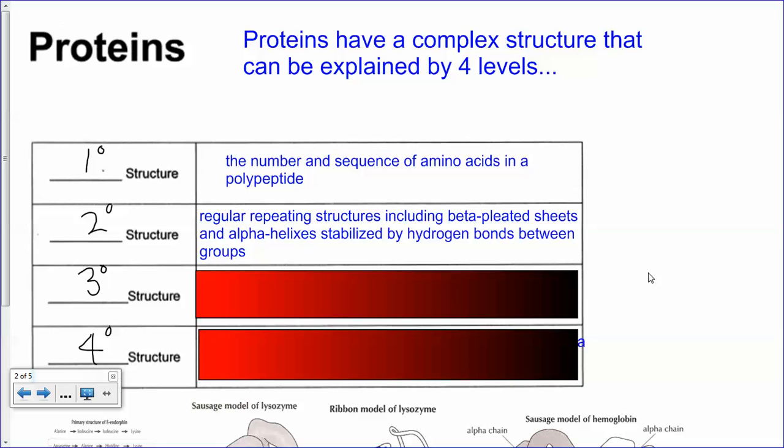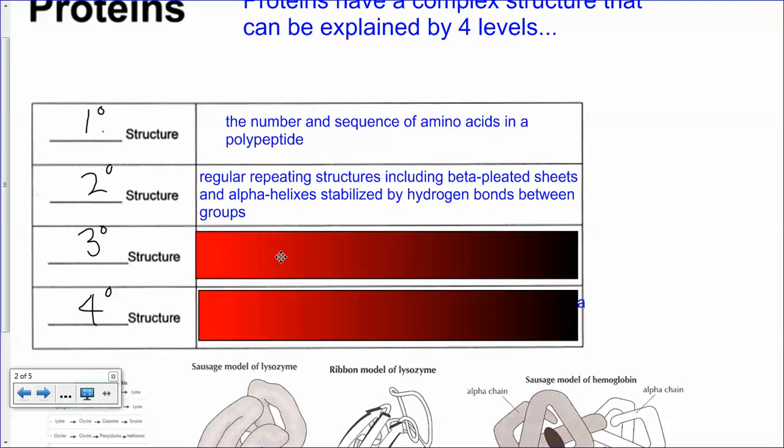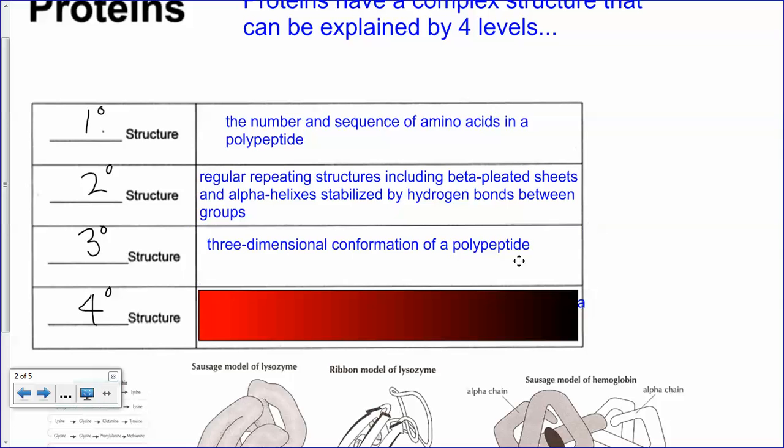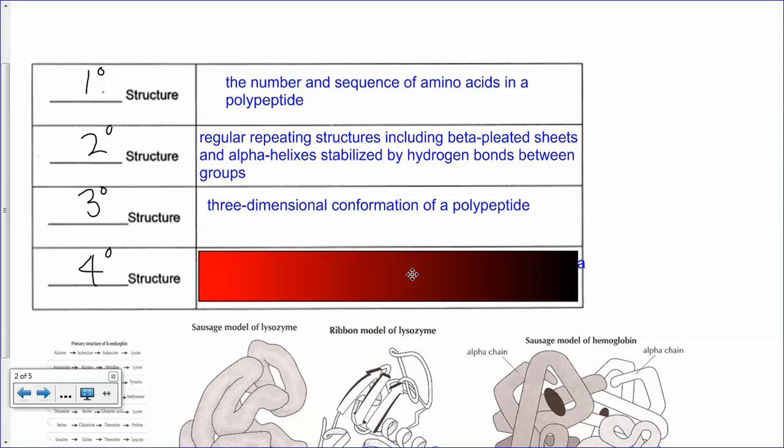The tertiary structure is how that one spinning structure or folded structure folds again on itself - super folding. That becomes, that starts to make the thing really three-dimensional. Think of the tertiary structure as 3D, when it starts to become 3D.